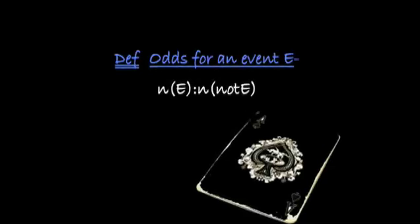The definition of the odds for an event is defined to be the ratio of number of outcomes in E to the number of outcomes that are not in E.